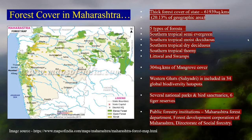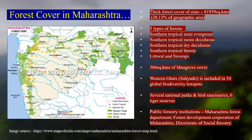One very important thing about Maharashtra is the Western Ghats — the Sahyadri — which is included in the global biodiversity hotspot. We also have certain national parks, a few bird sanctuaries, and six tiger reserves — protected forest areas. Government bodies working on these include the Maharashtra Forest Department, the Forest Development Corporation, and the Directorate of Social Forestry.